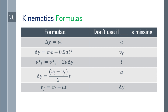Fourth, delta y equals the average velocity — which is initial velocity plus final velocity, divided by 2 — multiplied by time. And fifth: final velocity equals initial velocity plus acceleration times time.